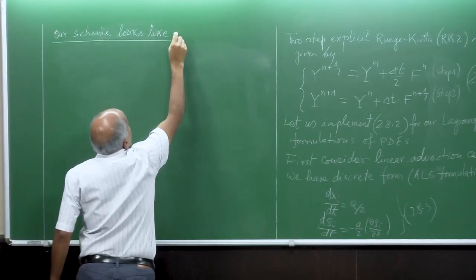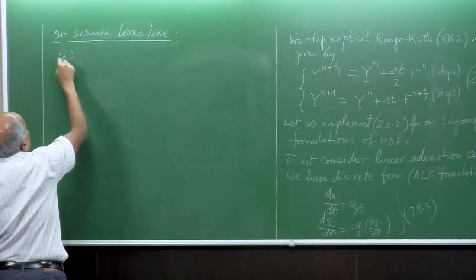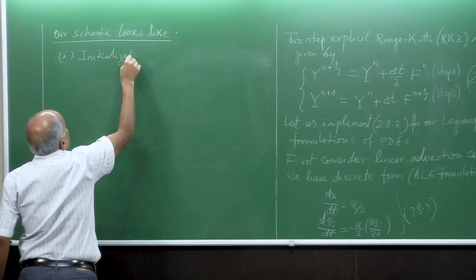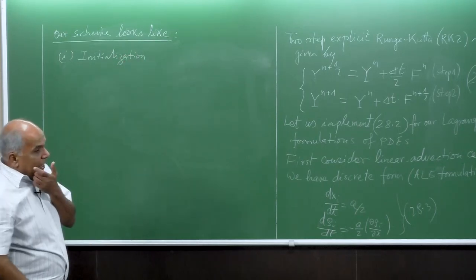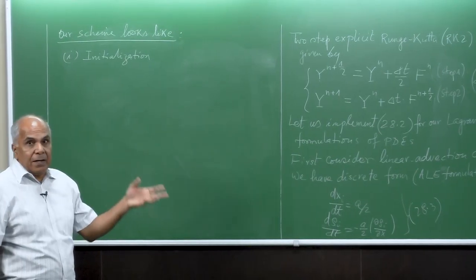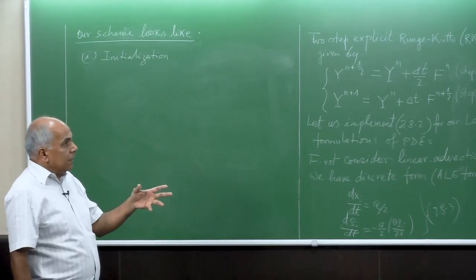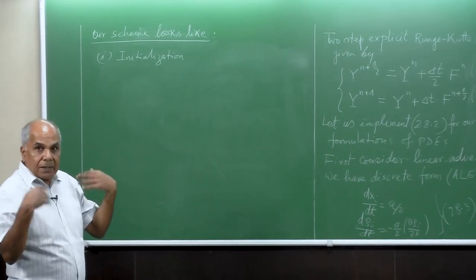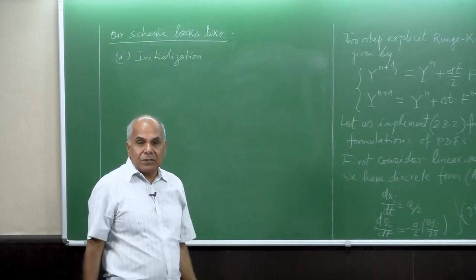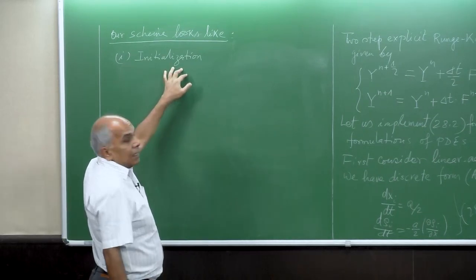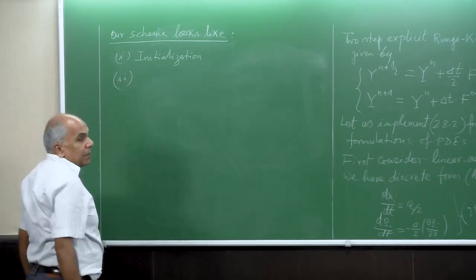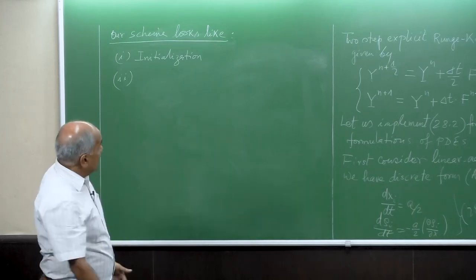So our scheme looks like this. The first part is initialization. You initialize your boundary, your grid, number of grid points. You initialize your final time step, then your initial grid, and then you discretize your initial condition. Everything in the initialization is as before, which I have already described.